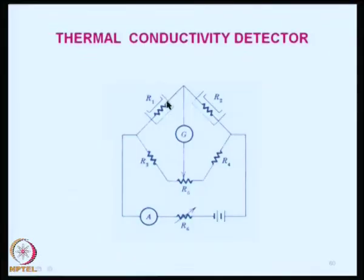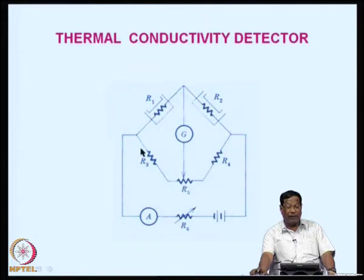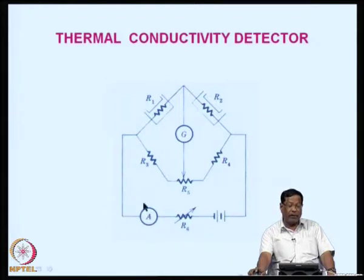The cell cavity in which the sample enters is approximately 2.5 ml for large thermal conductivity detectors, or 0.025 ml for micro TCD. The total volume could be maximum 5 ml for the whole TCD. The system is very simple, consisting of different resistance wires, a galvanometer, a resistor, an ammeter, and a power supply.